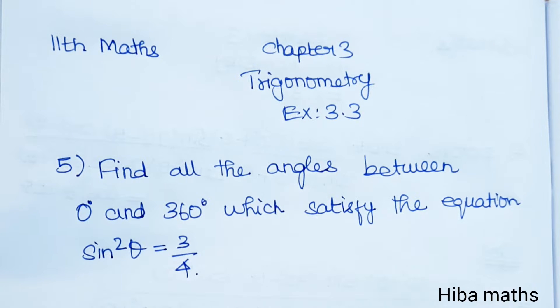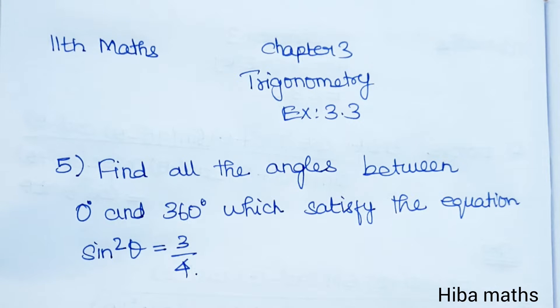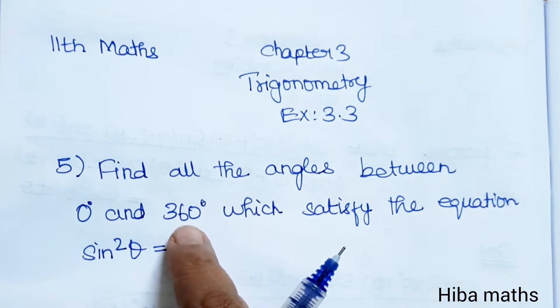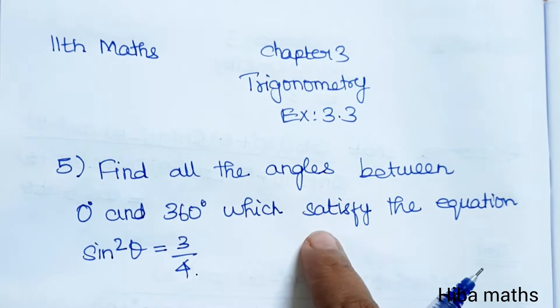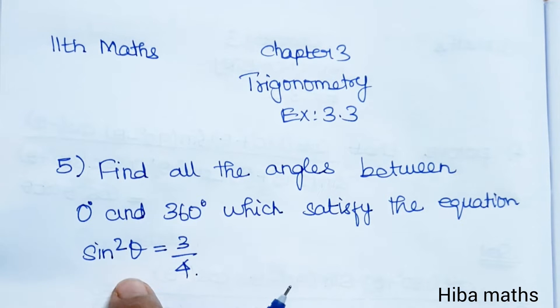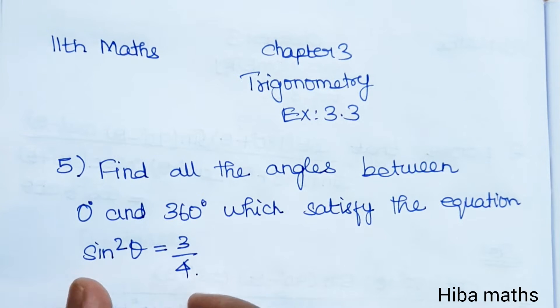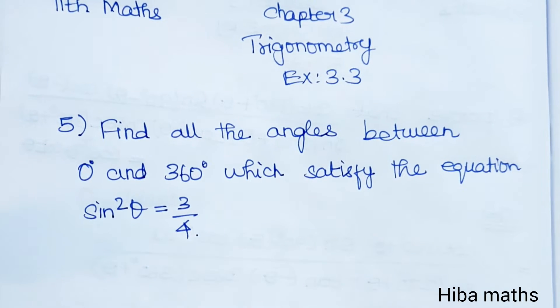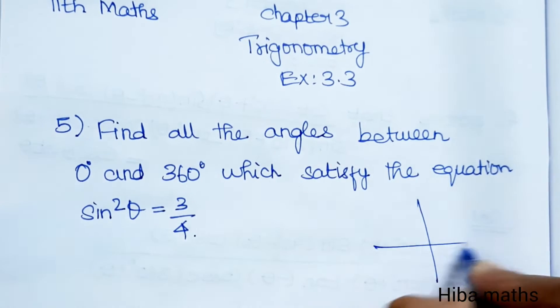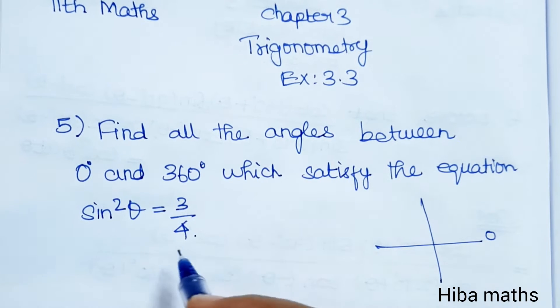Hello students, welcome to Hiba Maths, 11th standard maths, chapter 3 trigonometry, exercise 3.3, 5th question. Find all the angles between 0 degree and 360 degree which satisfy the equation sin square theta equals 3 by 4. We need to find all the angles between 0 to 360 which satisfy this value.